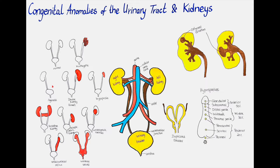Nephronophthisis or Fanconi syndrome is an autosomal recessive disease in which the patient usually has chronic tubulo-interstitial nephritis due to inflammation and scarring of the nephrons, which eventually leads to renal failure — usually during the second decade of life in the juvenile form, or before the age of five in the infantile form. Oligonephronia is a congenital defect in which the kidney has fewer than the normal number of nephrons, but the ones that are present are usually functional.